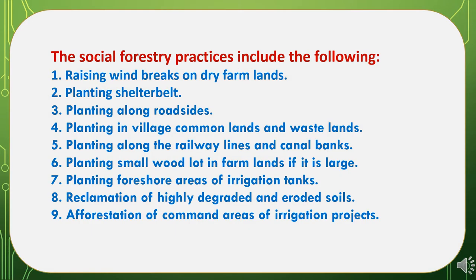Social Forestry practices combine different activities: first, raising windbreaks on dry farmlands; second, planting shelter belts; third, planting along road sides; fourth, planting in village common lands and wastelands; fifth, planting along railway lines and canal banks; sixth, planting small wood lots in large farmlands; seventh, planting foreshore areas of irrigation tanks; eighth, reclamation of highly degraded and eroded soils; and ninth, afforestation of common areas of irrigation projects.